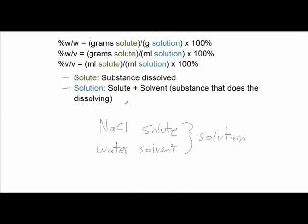Looking closer at the definition of each: in percent weight-weight, it's grams of solute divided by grams of solution times 100% — so it's the weight of the solute in grams divided by the weight of the solution in grams. In percent weight-volume, it's the weight of solute in grams divided by the volume of solution in milliliters times 100%. In percent volume-volume, it's milliliters of solute divided by milliliters of solution times 100%.